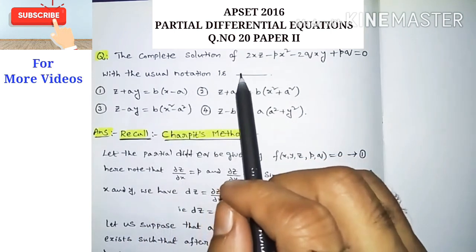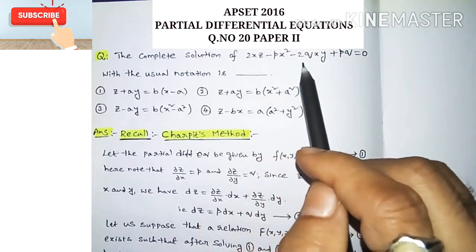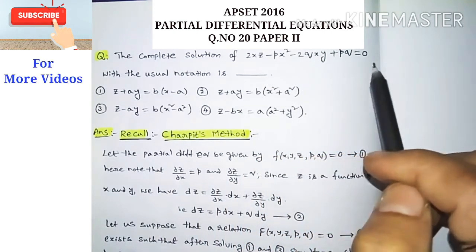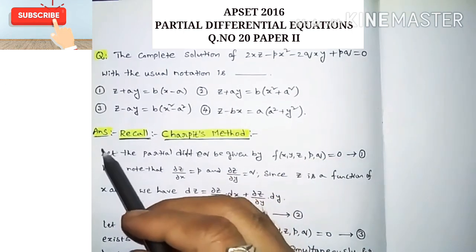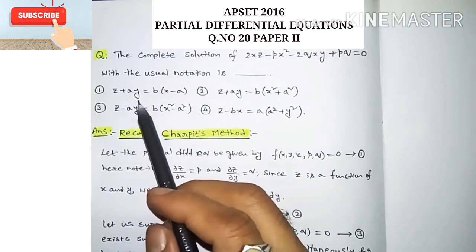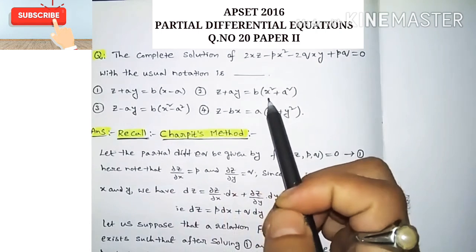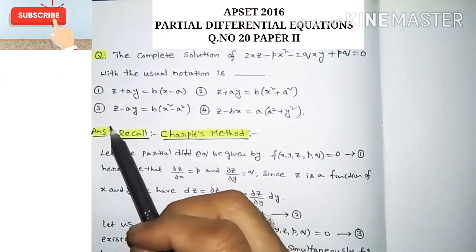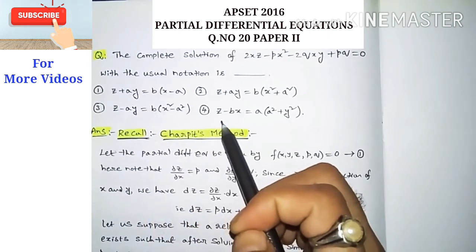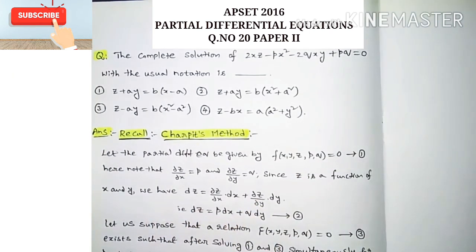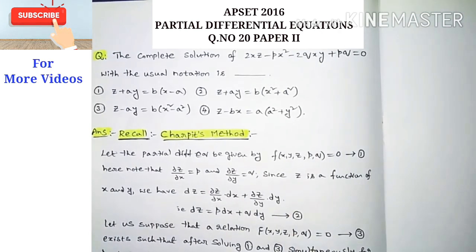The question is: the complete solution of the equation 2xz minus px² minus 2qxy plus pq is equal to 0, with the usual notation. The four options are: option 1, z plus ay = b(x minus a); option 2, z plus ay = b(x² plus a²); option 3, z minus ay = b(x² minus a²); and option 4, z minus bx = a(a² plus y²).